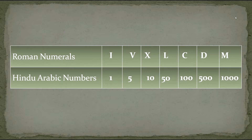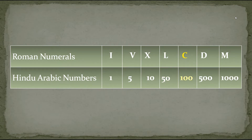The first row gives us the letters used in the Roman numerals and the second row gives us the value of Roman numerals in terms of Hindu-Arabic numbers. I is equal to 1, V is equal to 5, X is equal to 10, L is equal to 50, C is equal to 100, D is equal to 500, and M is equal to 1000.